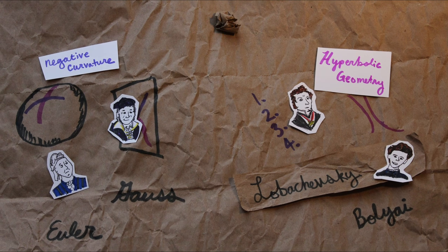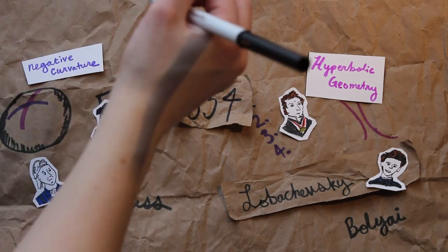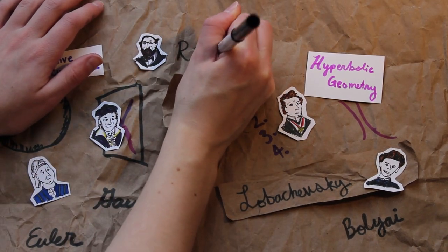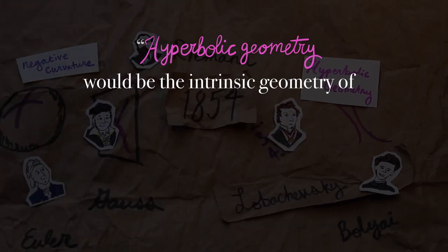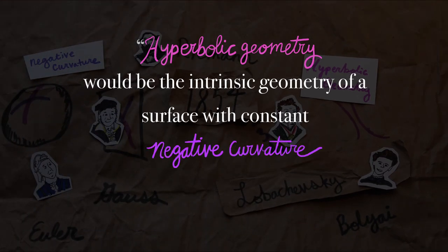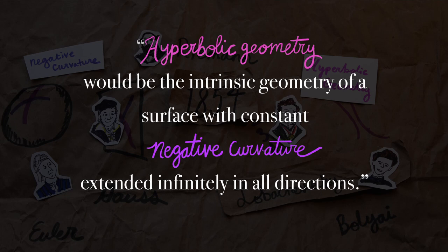In 1854, Riemann entered the scene, and he combined these two separate ideas. Riemann described how hyperbolic geometry would be the intrinsic geometry of a surface with constant negative curvature extended infinitely in all directions.